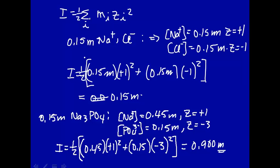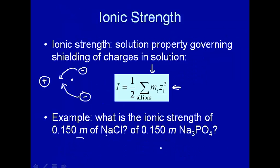Note that the units of ionic strength are the same as the concentration units you're using. So even though you have the same concentration of sodium chloride and sodium phosphate, sodium phosphate has a much higher ionic strength — 0.9 versus 0.15 molal — which means it is much more effective in shielding two charges in solution. That's the concept of ionic strength.